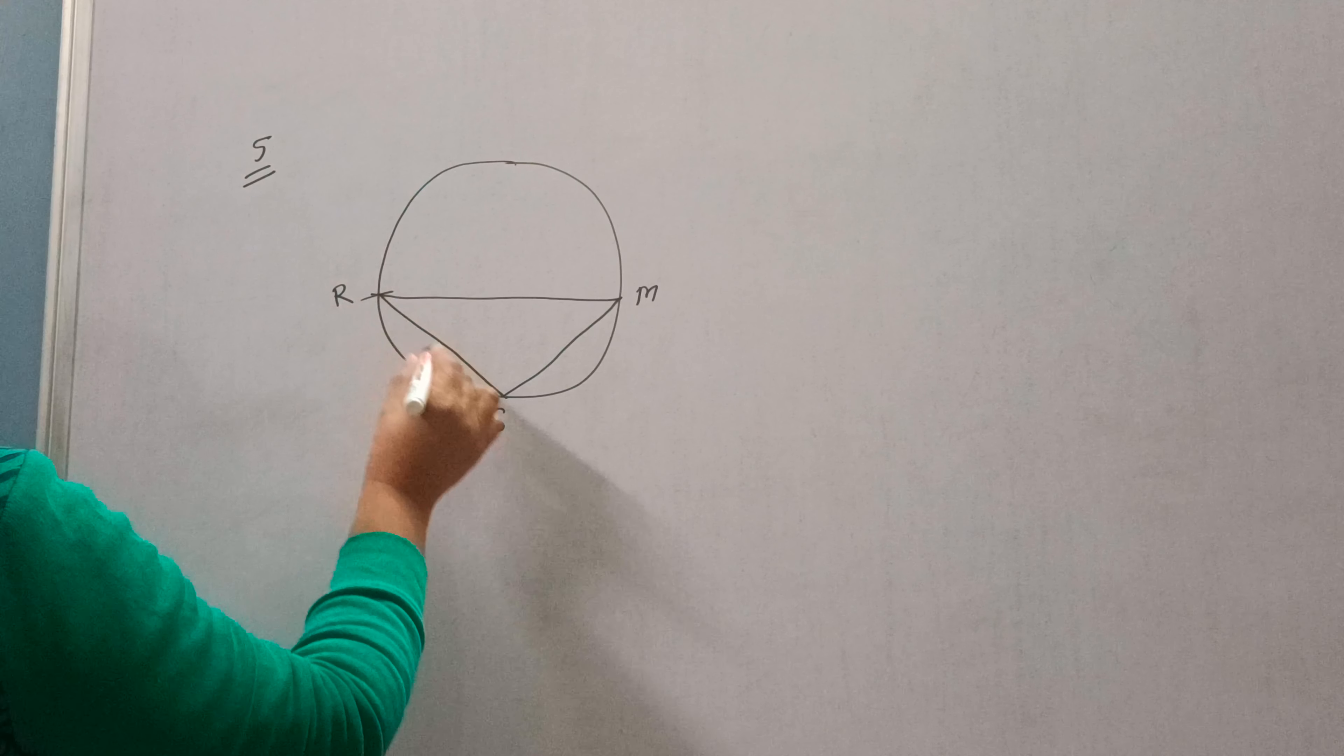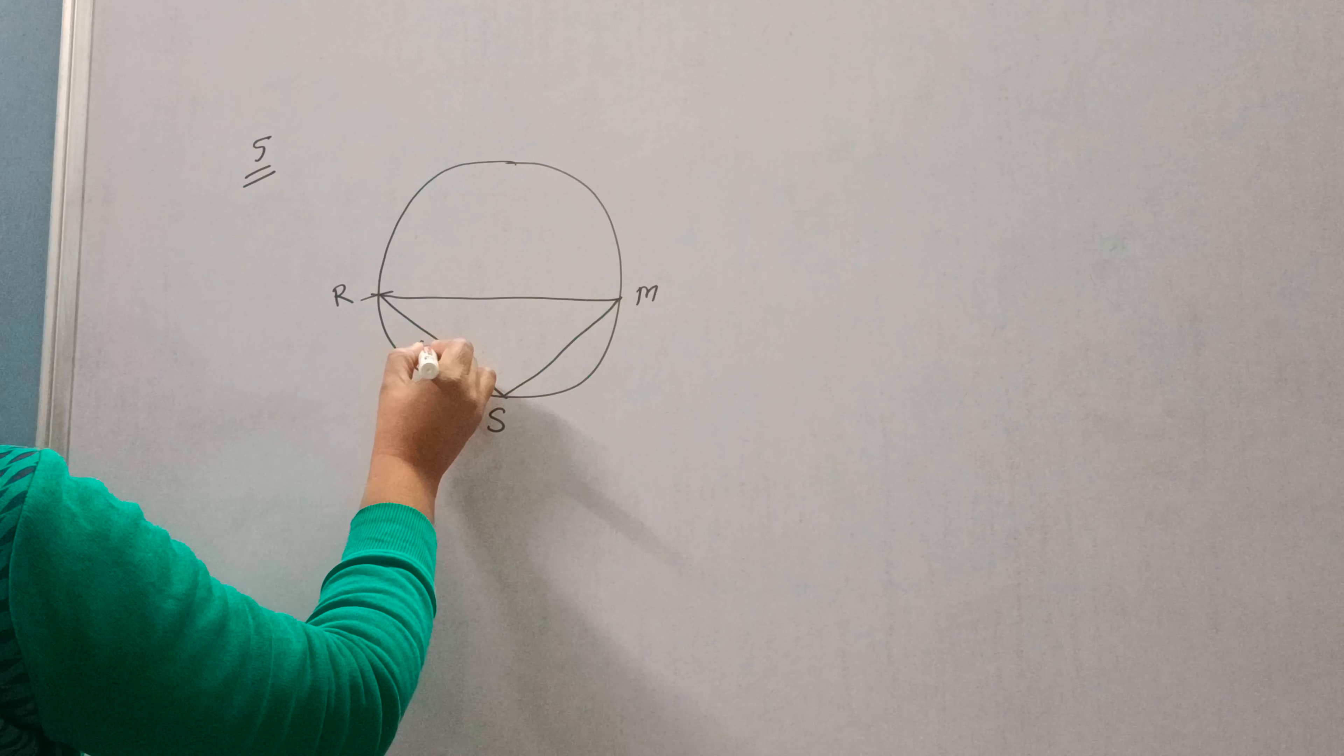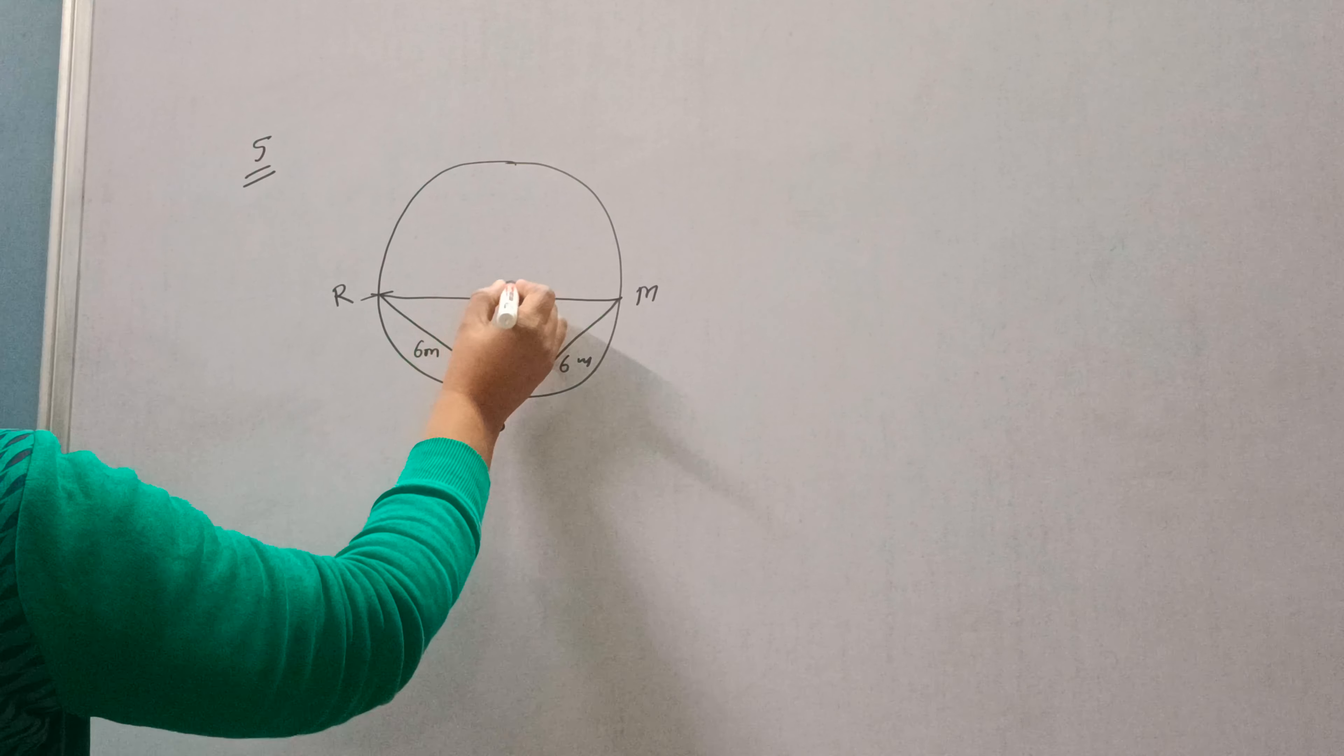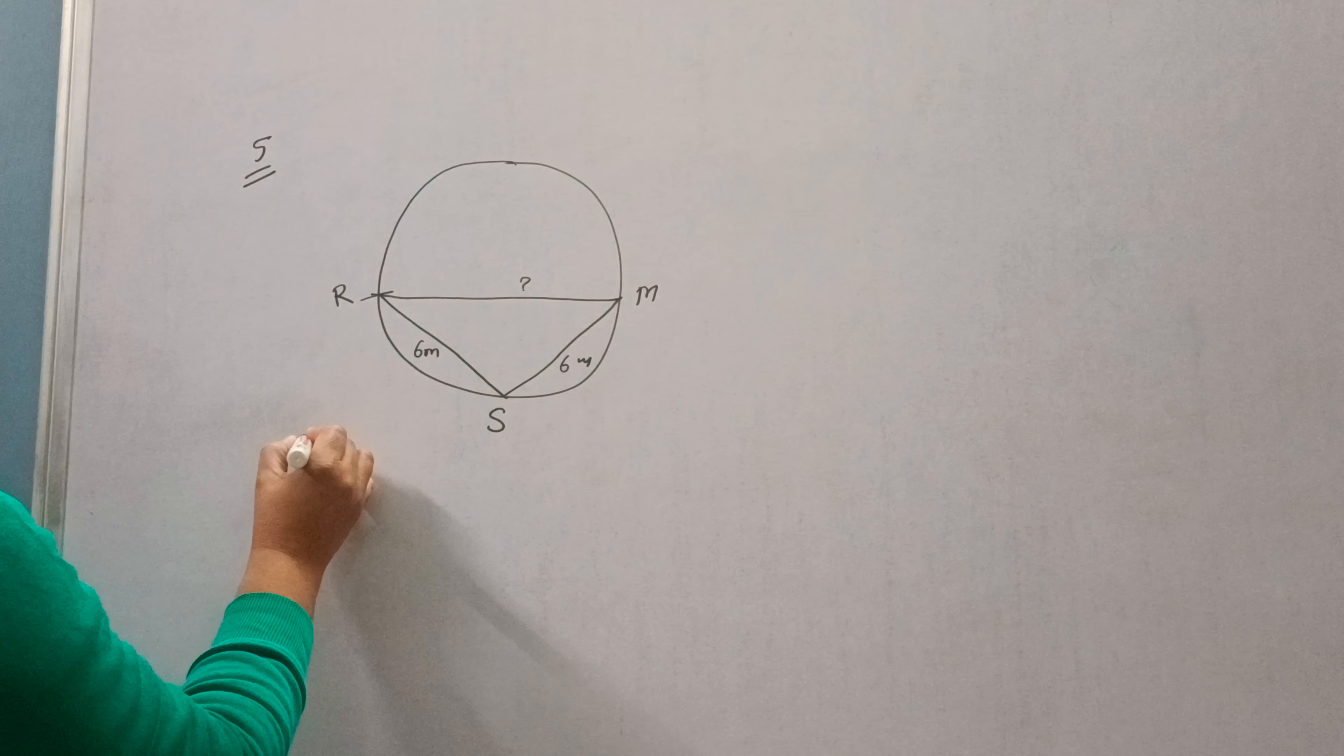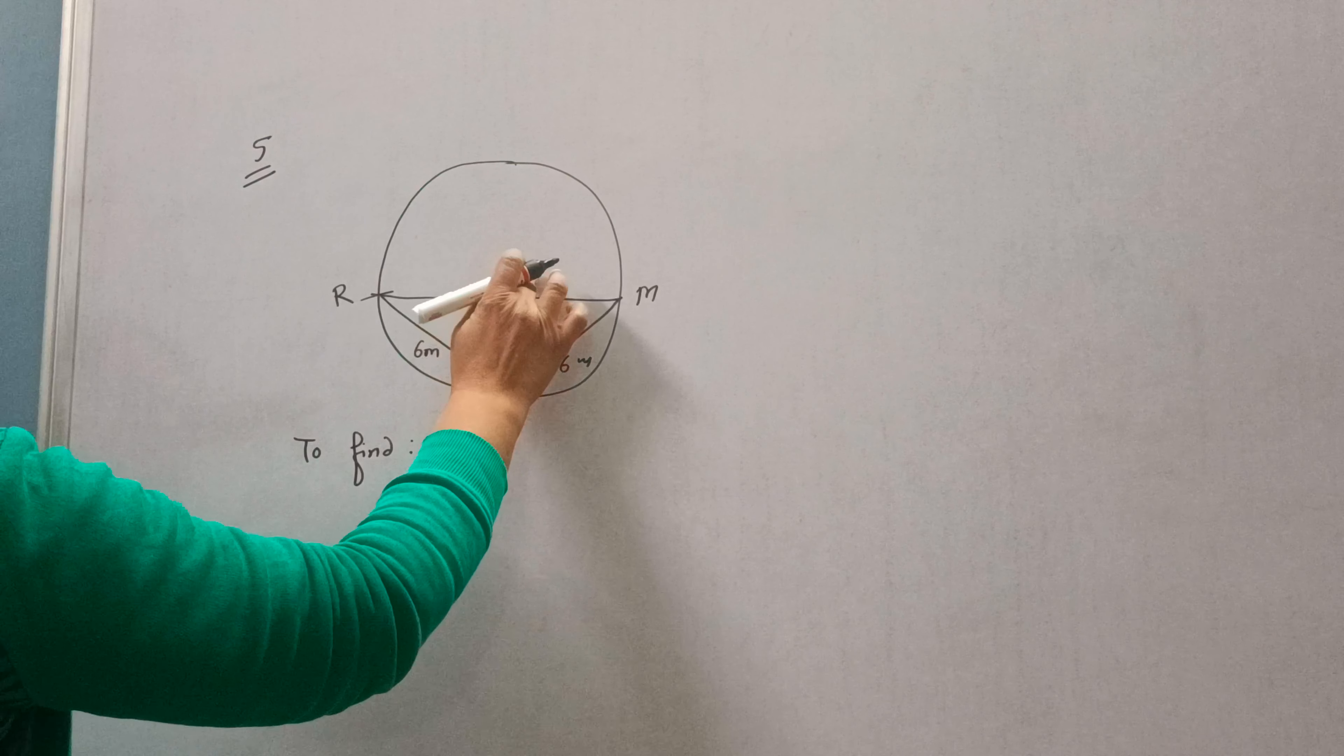If the distance between Reshma and Salma and between Salma and Mandir is 6 meters each, what is the distance between Reshma and Mandir? We need to find RM, the length of RM.